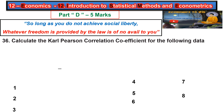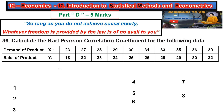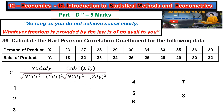Calculate the Karl Pearson correlation coefficient for the following data. The knowledge of mathematics required is very simple. The formula is: r equals n times sigma dx·dy minus sigma dx times sigma dy, divided by the square root of n times sigma dx² minus sigma dx whole square, into the square root of n times sigma dy² minus sigma dy whole square.